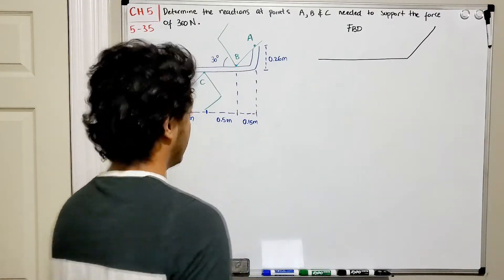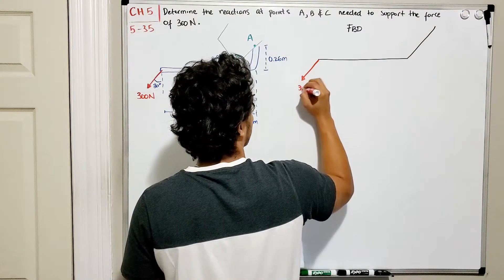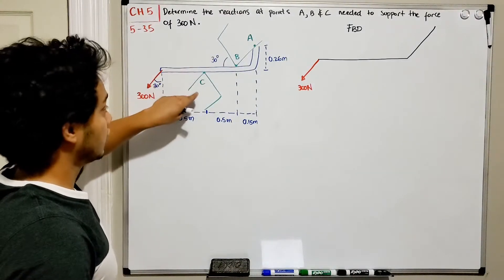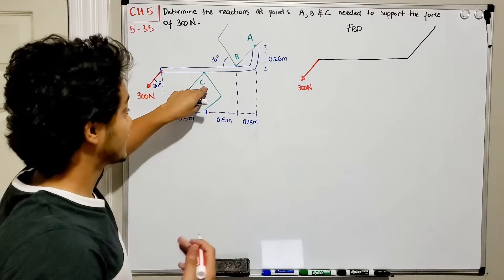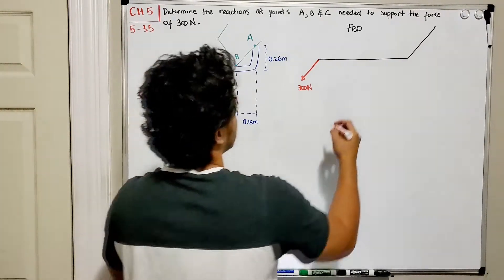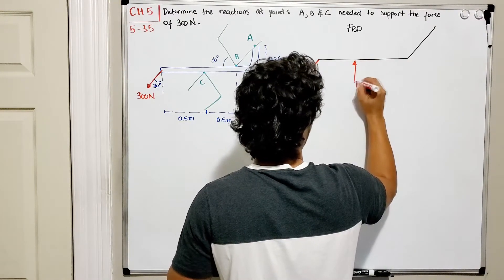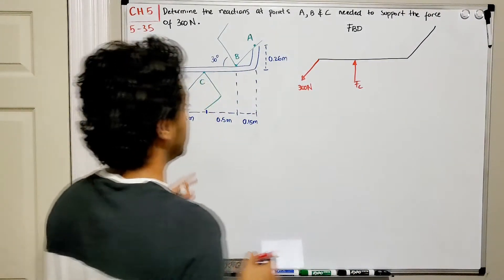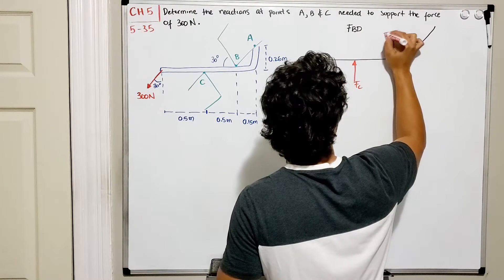We have our 300 N in this direction. Now on each of these surfaces A, B, and C, we're going to represent the surface contact by a force that is normal to that surface. At point C the normal will be going up, so we'll have a force we call FC going up. At point B, similarly, the force FB will be going down.